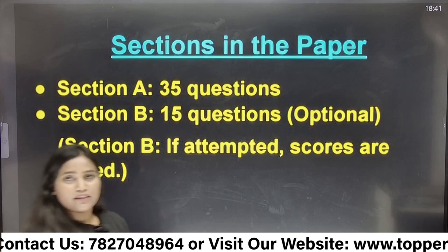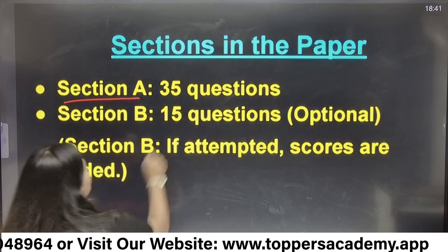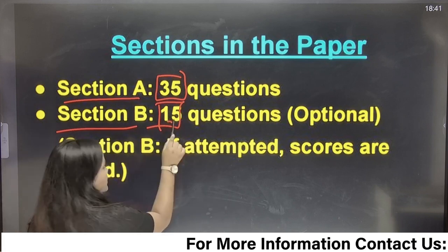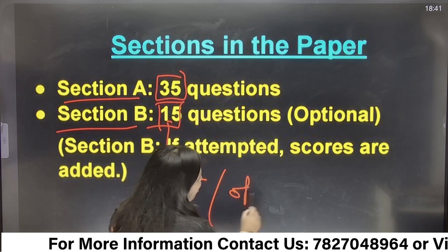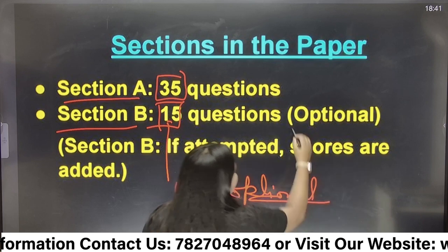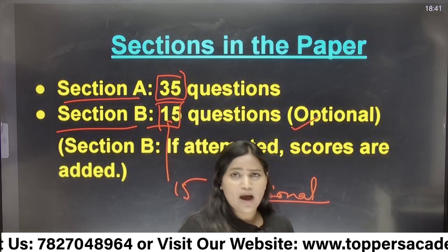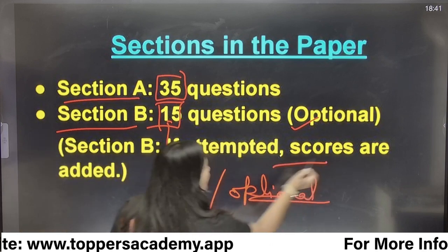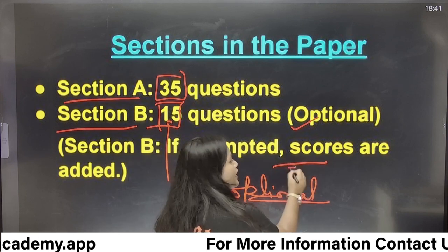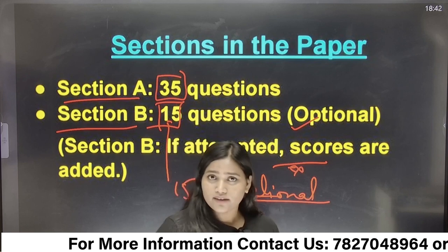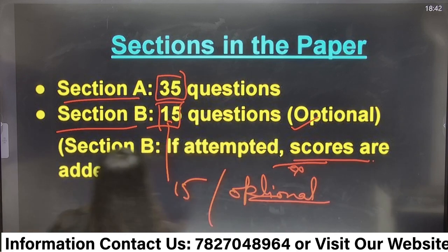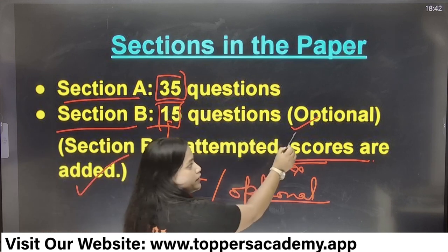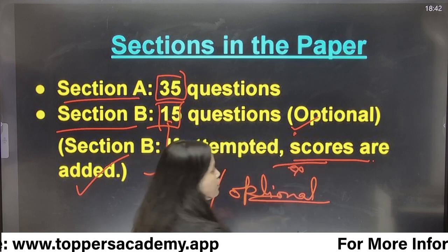In the paper, there are two sections. Section A has 35 questions, and Section B has 15 questions. Section B is optional — it is your choice whether you want to attempt it or not. If you do not attempt it, you will not lose any score. But if you attempt Section B and get a correct answer, the score will be added to your marks.